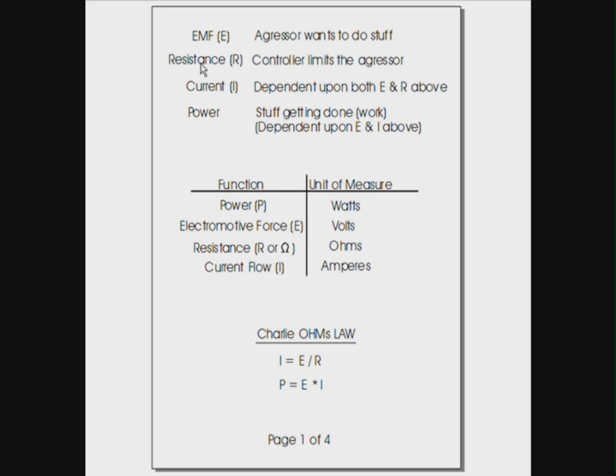Resistance in a circuit is what controls the aggressor. This controller, which we call resistance, limits the aggressor. It limits what the aggressor can do, how fast the aggressor can give off its power. And the result is what we call current, and the symbol I is used for current. C stands for Coulombs in the physics world, therefore we had to use I. Notice that the current is dependent upon both the voltage, the EMF, and the resistance of the circuit. So the current is actually a result of the other two functioning together.